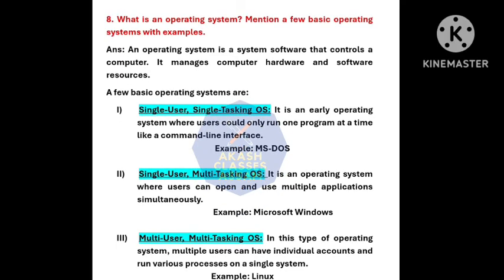Our last question: What is an operating system? Mention a few basic operating systems with examples. An operating system is a system software that controls a computer; it manages computer hardware and software resources. A few basic operating systems are: first, single-user single-tasking operating system — an early operating system where users could only run one program at a time, for example MS-DOS. Second, single-user multitasking operating system — an operating system where users can open and use multiple applications simultaneously, for example Microsoft Windows. Third, multi-user multitasking operating system — multiple users can have individual accounts and run various processes on a single system, for example Linux.